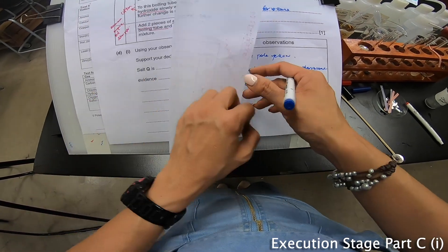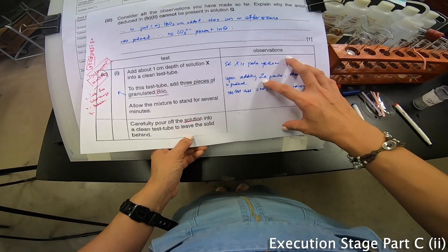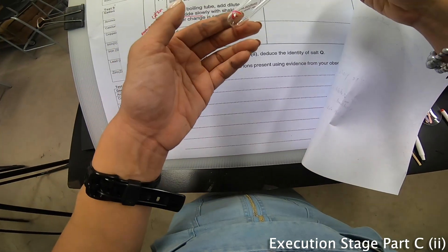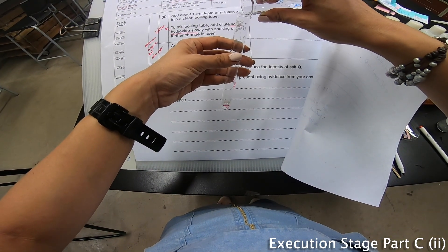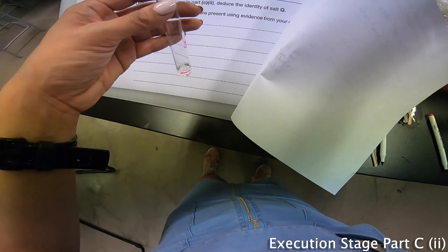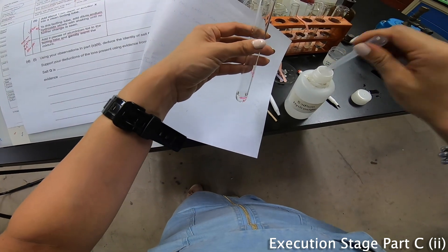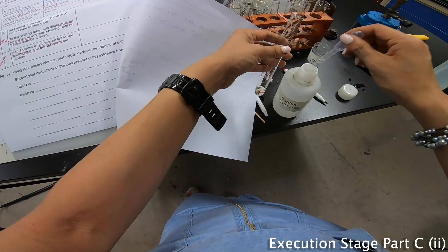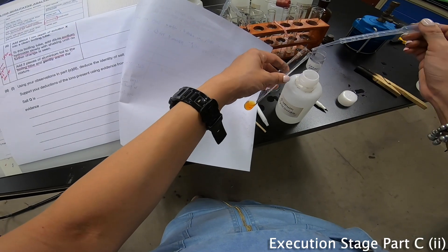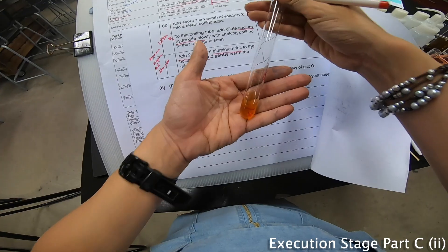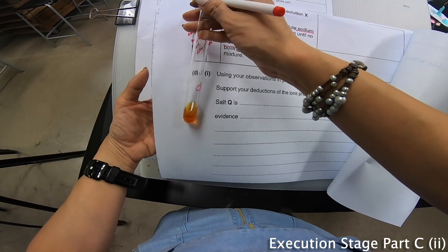Pour off the solution into a clean test tube to leave the solid behind. They say add about one cm, so I'm going to leave this first. To the next portion, I add another X inside. Then now I add sodium hydroxide. I saw brown precipitate forming. You can see there's brown precipitate forming. With the white background is even better.